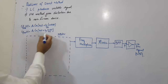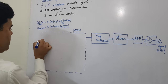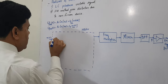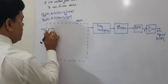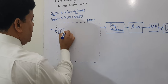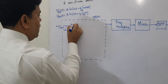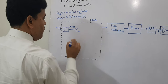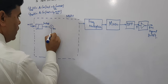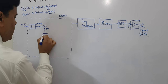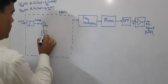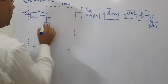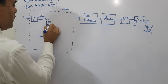In the FM signal, you are taking the integration of the message signal. That is why this is called the indirect method of generating wide band signals. The message signal is given to an integrator, and the output will be the integral of m(t) dt. This is then used in a product modulator or balanced modulator, whose other input is a 90-degree phase-shifted version of the local oscillator, which is cos(omega_C * t), giving sin(omega_C * t) at the phase shifter output.